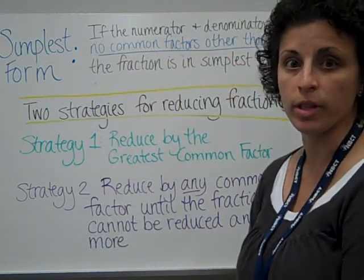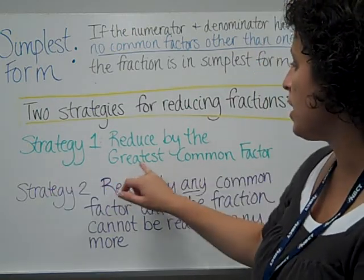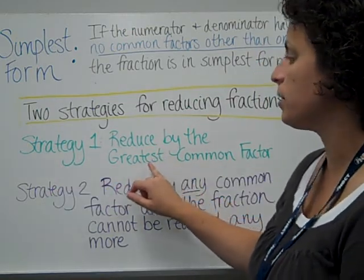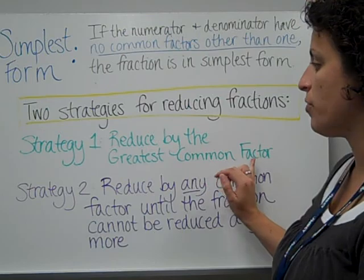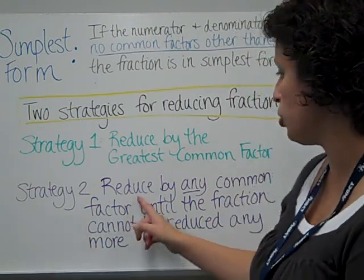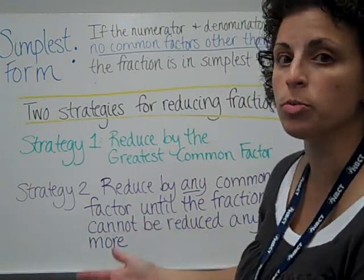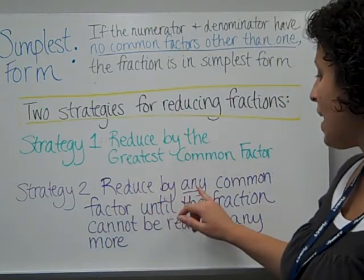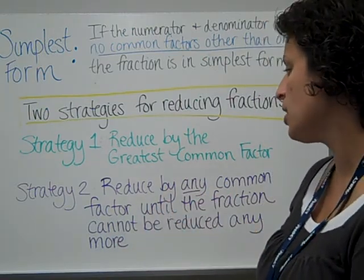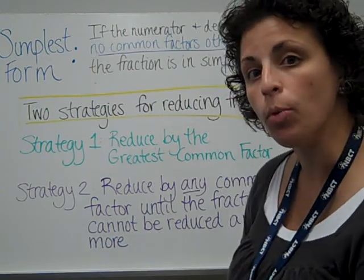We have two strategies for doing this in fifth grade. The first strategy is to reduce by the greatest common factor. Or we can reduce, simplify—those words mean the same thing—reduce by any common factor until the fraction cannot be reduced anymore.